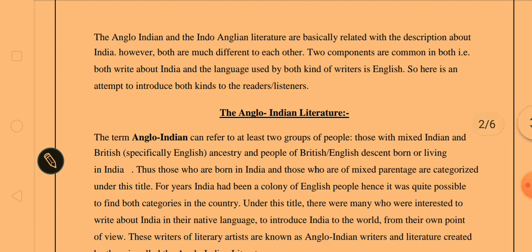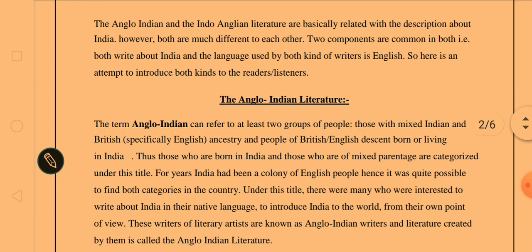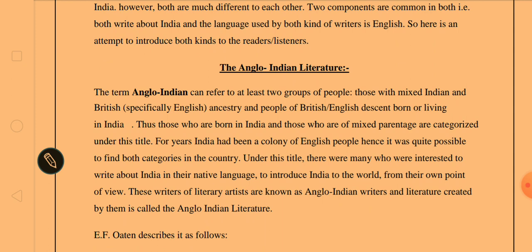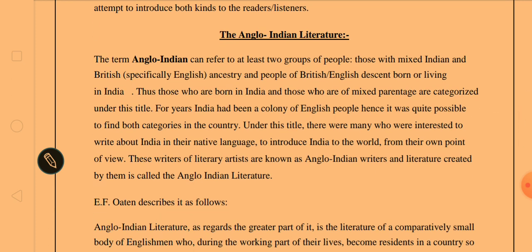Let's first take Anglo-Indian literature into consideration. The term Anglo-Indian can refer to at least two groups of people. Number one, those with mixed Indian and British — specifically English — ancestry, and people of British or English descent who are born in India or living in India. India had been a colony of English people for years, and hence it was quite possible to find both categories in the country.